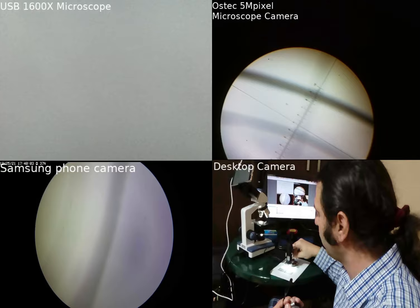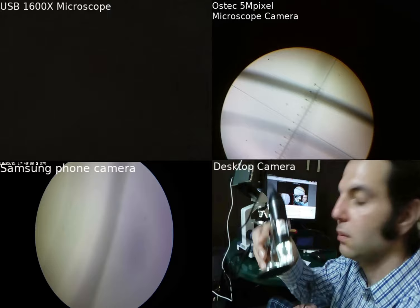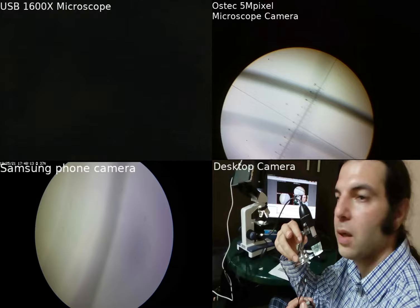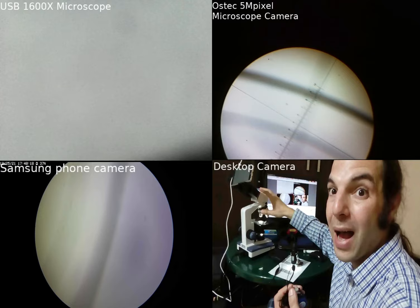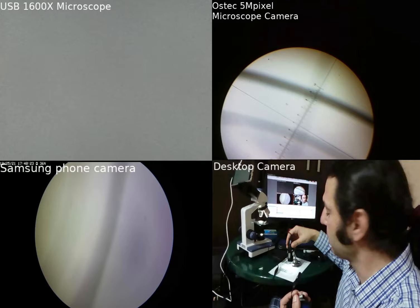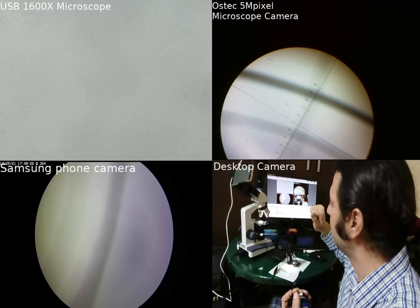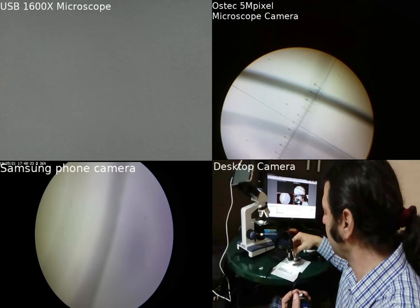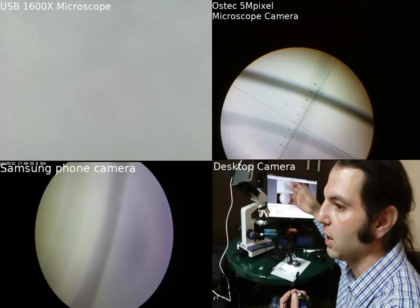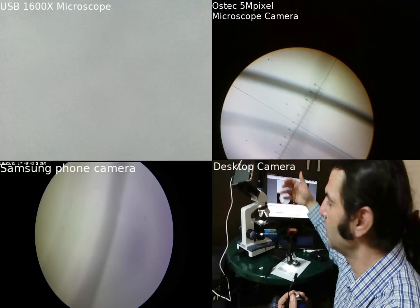Hello, welcome to my channel SuperLinux. In this video we're trying to explain and show you the difference between using a USB microscope — this one goes from 50 to 1600 times magnification — and a biological microscope from Amscope. Both can be found on AliExpress, and we're going to show the differences between using a USB microscope and a biological optical microscope.